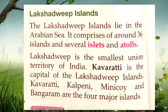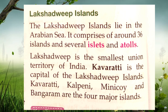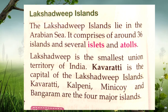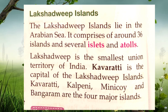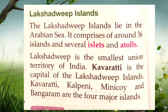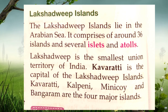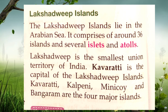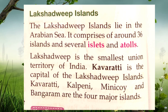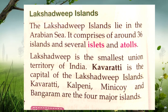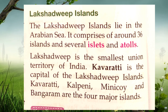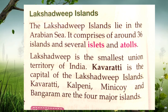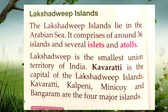We are going to discuss about the Lakshadweep Islands. These islands lie in the Arabian Sea. They comprise 36 islands, islets and atolls. Lakshadweep is the smallest union territory of India. Kavaratti is the capital of Lakshadweep Islands. The major four islands of Lakshadweep are Kavaratti, Kalpeni, Minicoy and Bangaram.